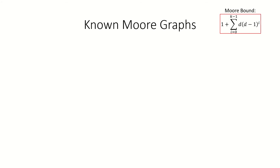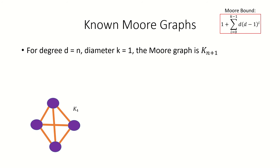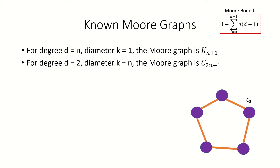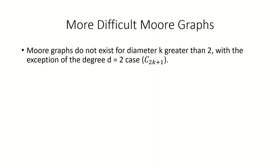Let's look at some of the known Moore graphs. For graphs with diameter 1 and maximum degree n, the complete graph on n+1 vertices is a Moore graph. You can verify this by plugging in 1 for k in our formula for the Moore bound — it does in fact evaluate to n+1 as our number of vertices. We've just described two infinite families of Moore graphs. But once our parameters move a little higher, Moore graphs get much rarer. Aside from the cycle graphs, it's been proven that there are no Moore graphs with diameter greater than or equal to 3.